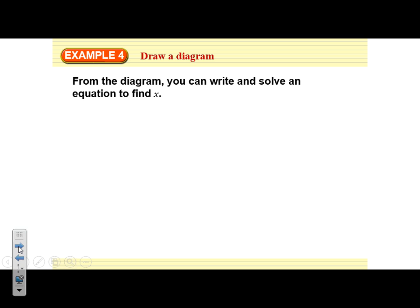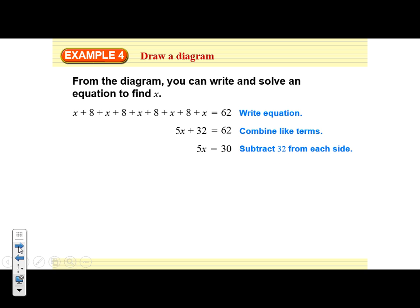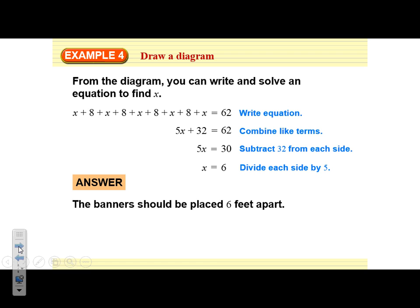So from that diagram, we can write and solve an equation. This is what it might look like: x plus 8 plus x plus 8, and all of those measurements add up to make 62. If we combine like terms and take a look at what we have, we have 5x plus 32 equals 62. We would subtract the 32 from each side. 5x equals 30. Therefore, when we divide by 5, we find that x is 6. That means that we should space the banners apart 6 feet.